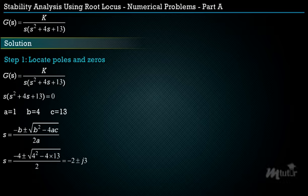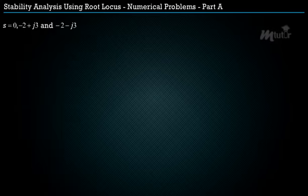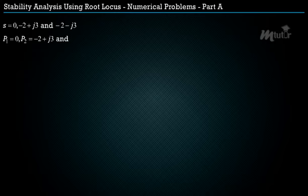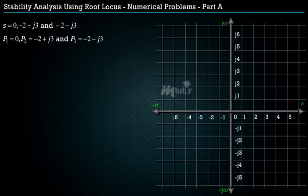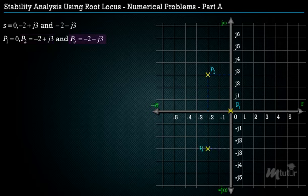The poles are located at s = 0, s = −2 + j3, and s = −2 − j3. Denoting these as P1 = 0, P2 = −2 + j3, and P3 = −2 − j3. On the graph sheet, mark the real and imaginary values; poles P1, P2, and P3 are marked with a cross symbol.